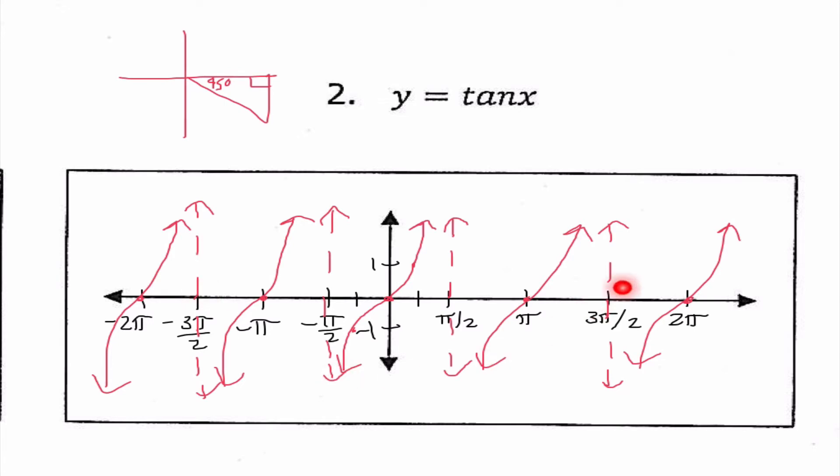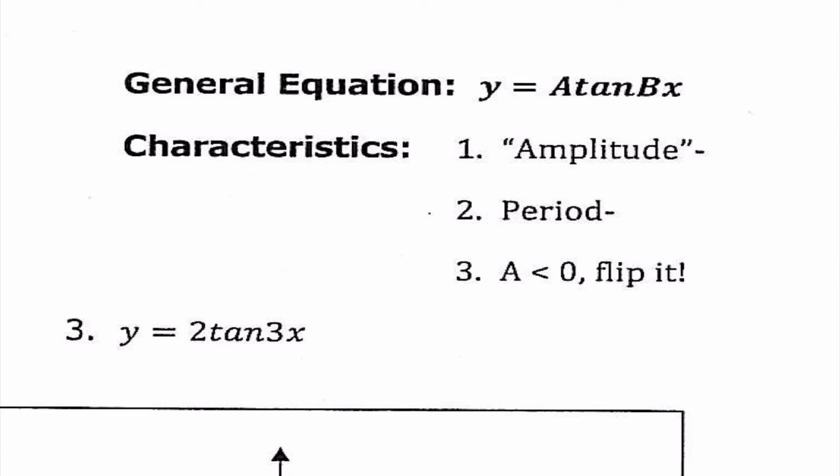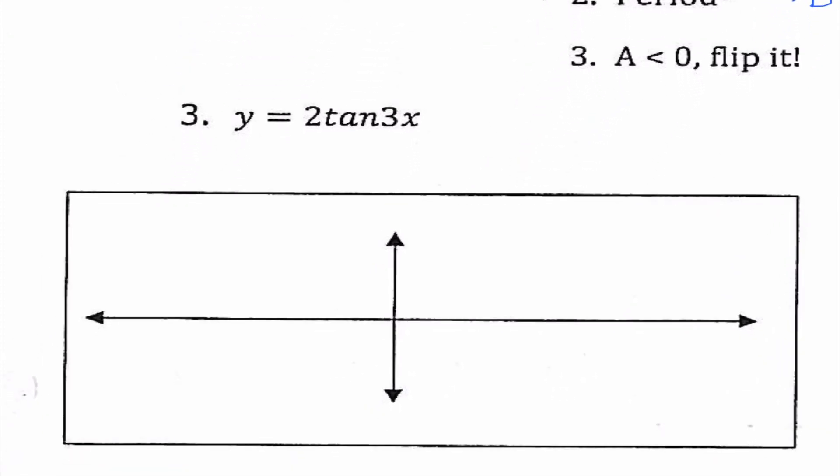So some things I notice on this graph, as opposed to sine and cosine, is that it appears that it repeats way more frequently. Because I labeled the same amount as our normal graphs, and I see 1, 2, 3, 4, 5 basically graphs going on here. So our general characteristics, our amplitude, and this time it really is in quotations, because technically it's not the maximum height, because it's going to continue to the right, but the amplitude is really going to tell us what that point is halfway between the origin and the asymptote. And we're finding that as the absolute value of A. The period is π over B this time, instead of 2π over B. And if A is less than 0, we're going to flip it.